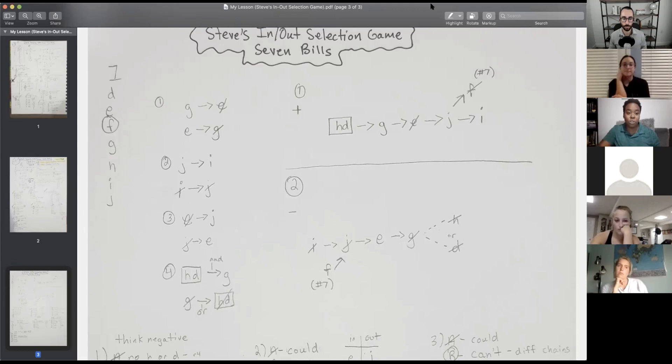This game is about a legislator voting on bills. She's voting on defense, environment, free trade, gun control, healthcare, immigration, and judicial activism. So I always write my variables down to the side, how many they are on top. The first rule is she votes for gun control only if she votes against environment. So G is in if E is out, and then you want to put your contrapositive there as well.